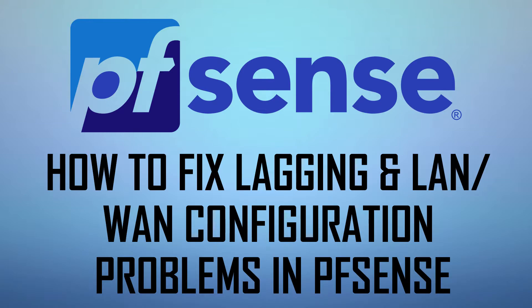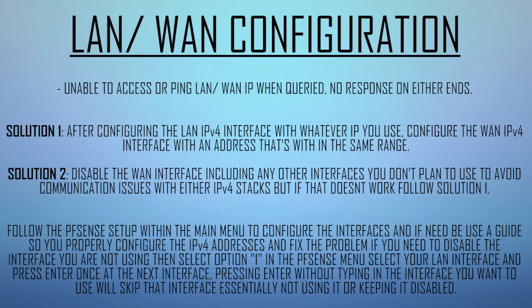So the first problem I had with the pfSense box was the problem with the LAN and WAN IP configuration. For some particular reason I wasn't able to access the LAN IP configuration. I watched a bunch of videos, looked all over the internet, and came across a video which basically said that even if you aren't using the WAN or the LAN, if you're using just the WAN and not the LAN, you have to configure both — because if you don't, you won't be able to access either. And to me that seems like a big oversight, because what if I'm only using the LAN?